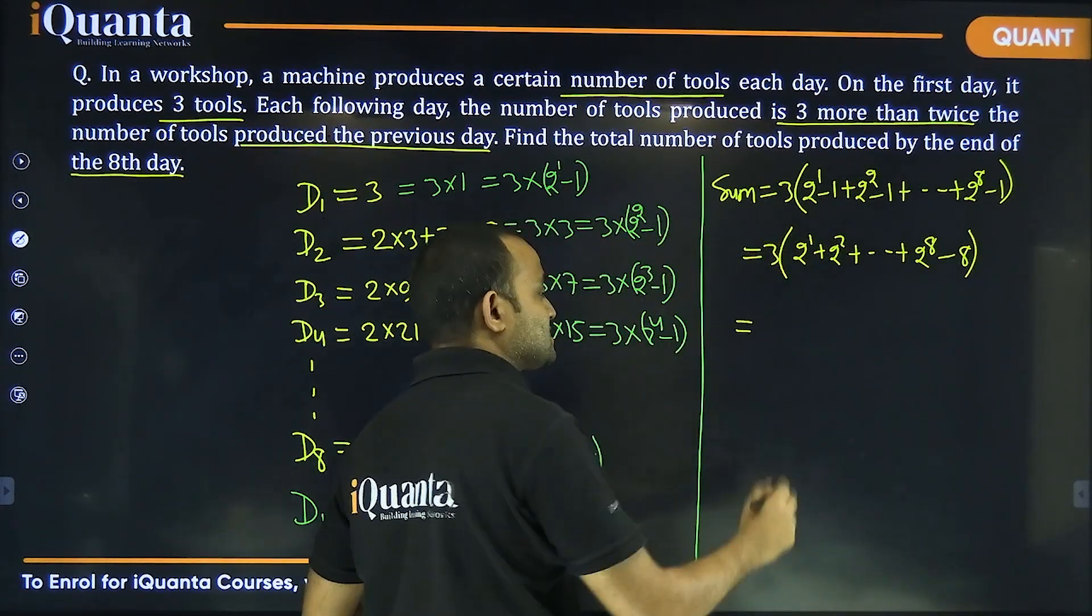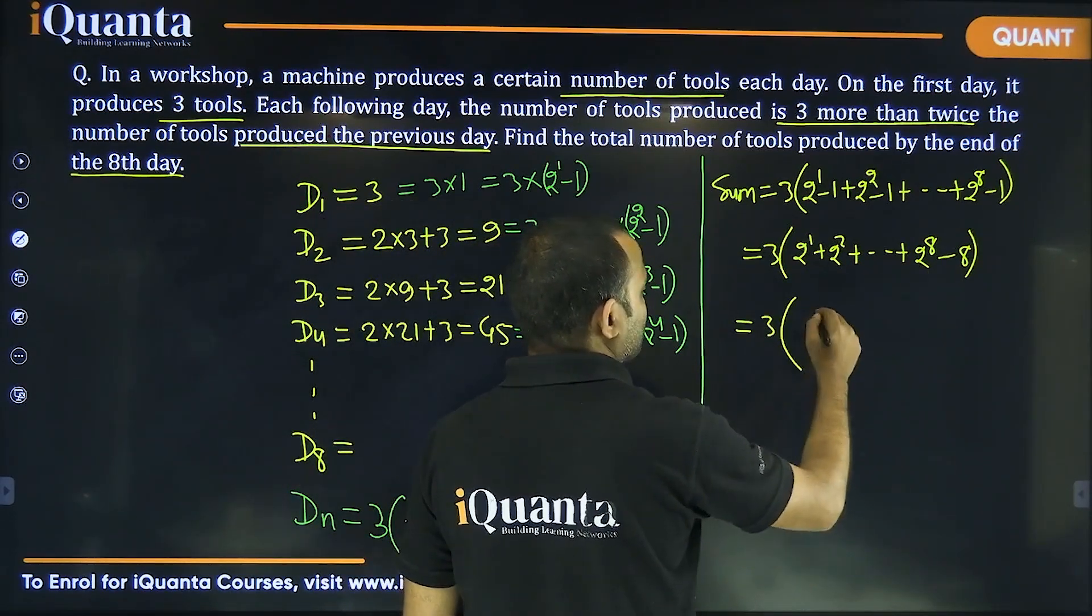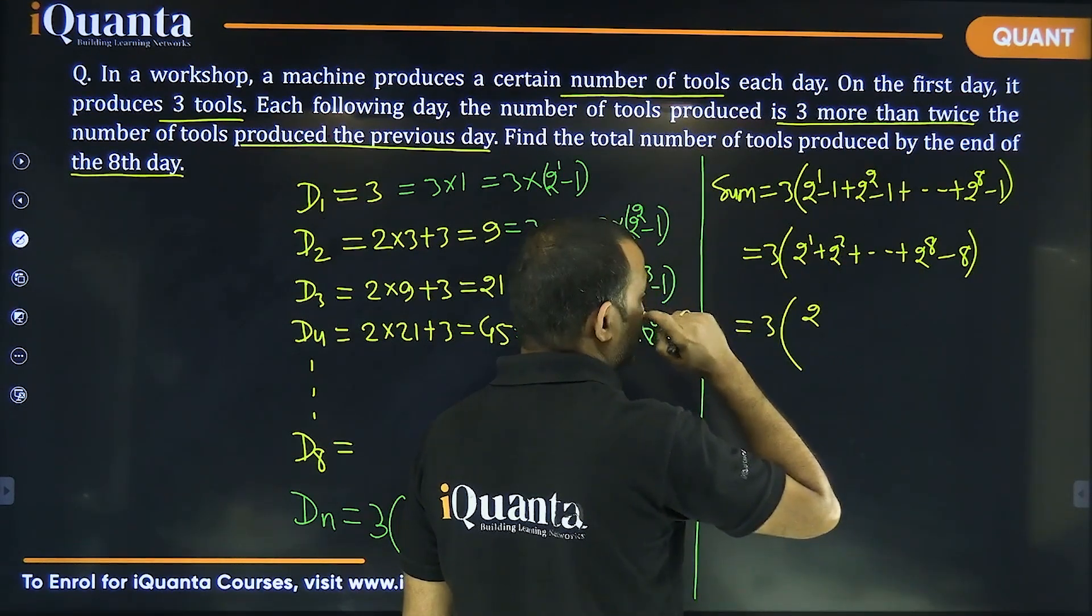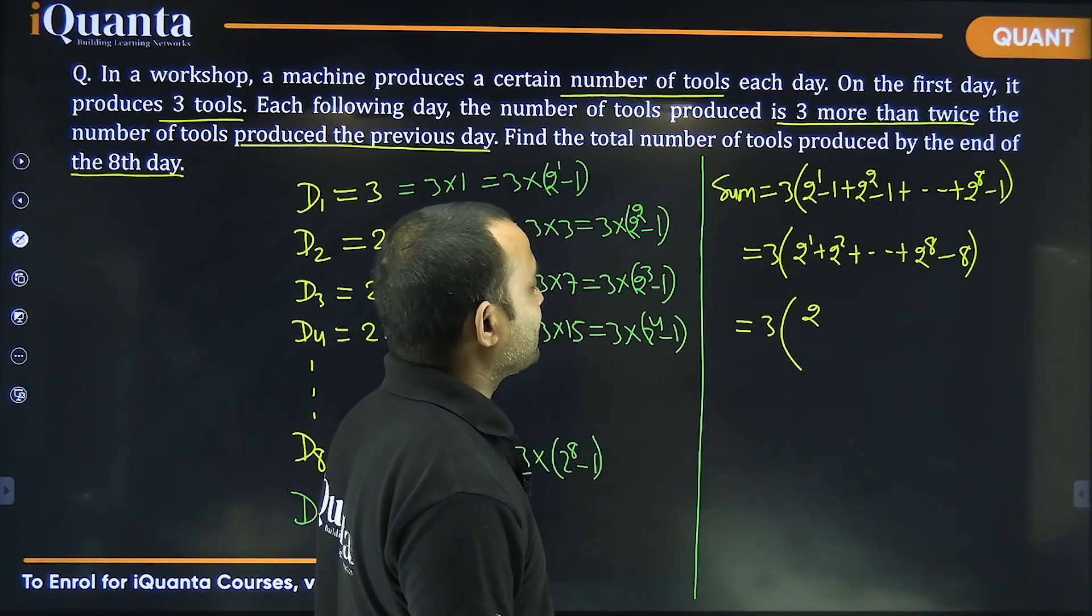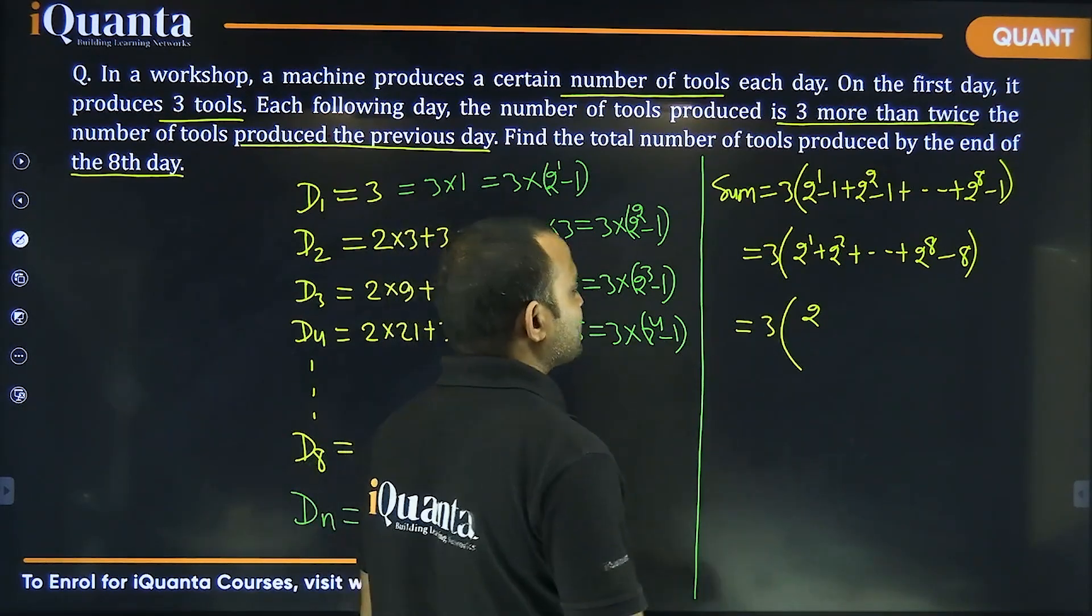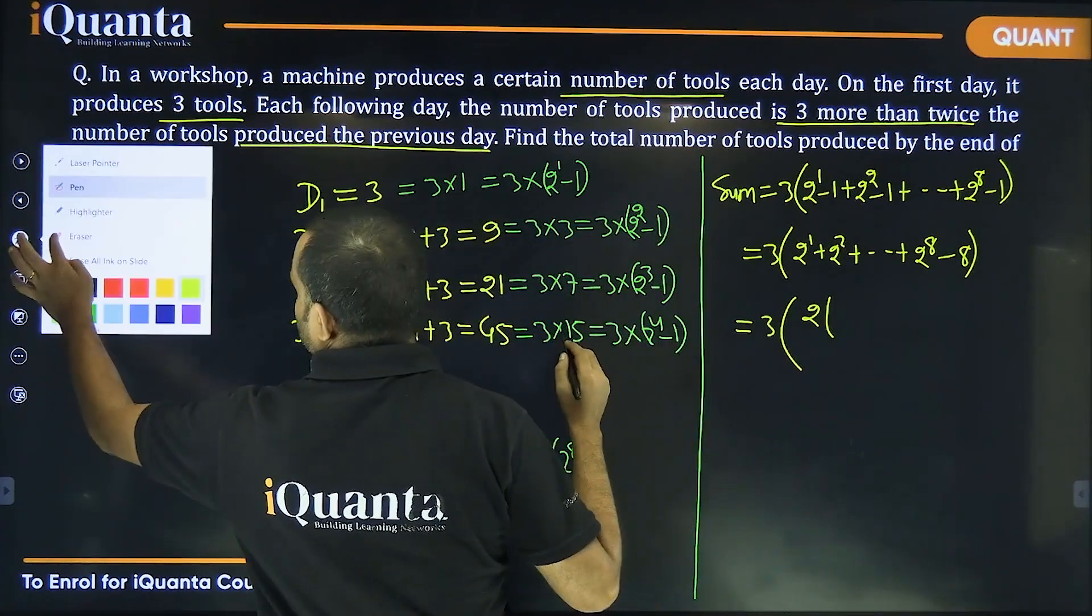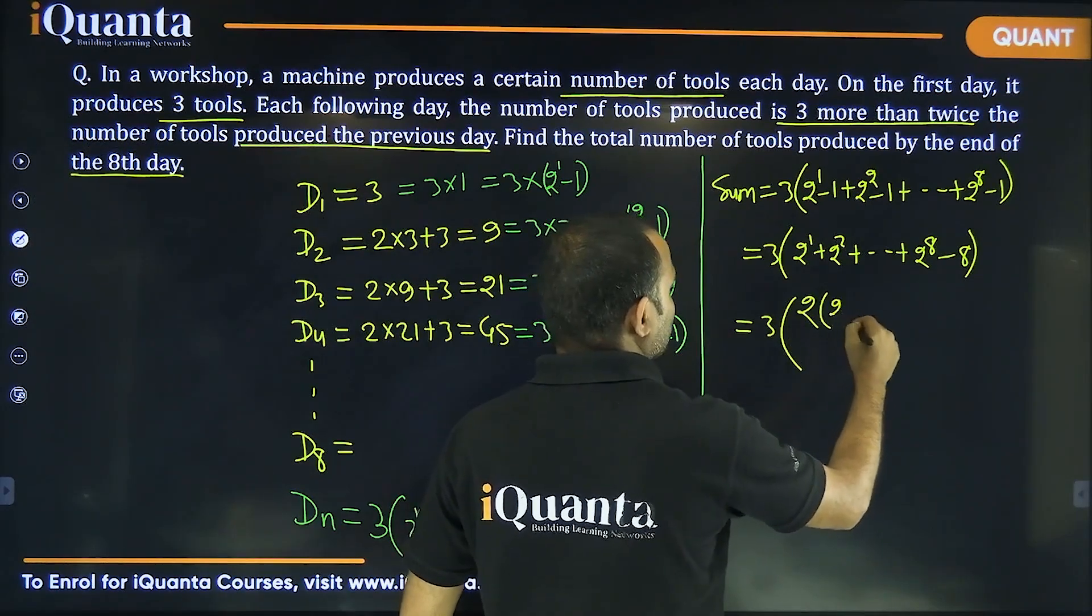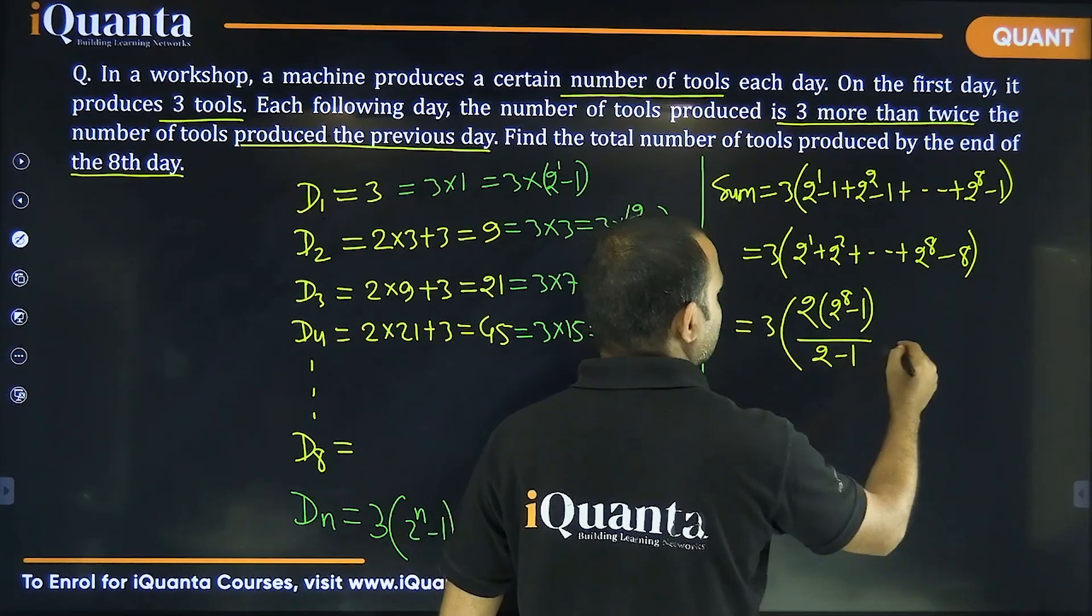Now, using the sum of a geometric progression, we can find the sum of this value. The first term is 2 and then common ratio is also 2. So, if you take the 2 common, we can say this will be equal to 2 to the power 8 minus 1 divided by 2 minus 1 minus 8.